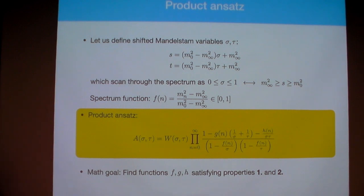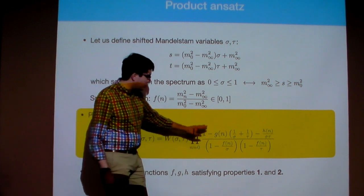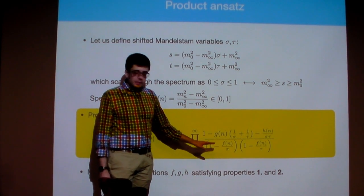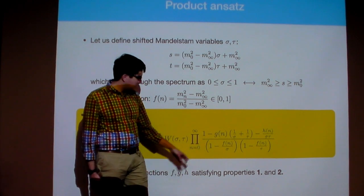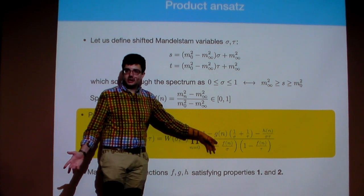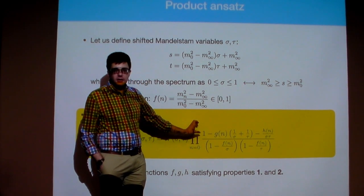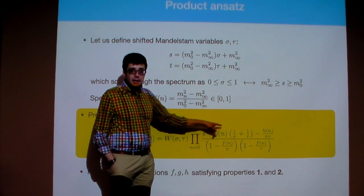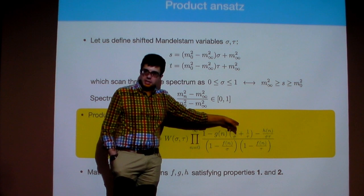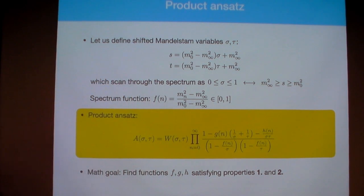We want to construct this infinite product such that both the numerator and denominator converge separately. The denominator naturally converges since f goes from zero to one. I also want the numerator to converge and behave well in the deep UV, so no explicit positive powers of sigma and tau. From that perspective, it's a natural object to write down, and we're taking this structure as a given and seeing what we can find.